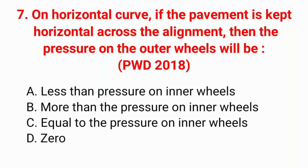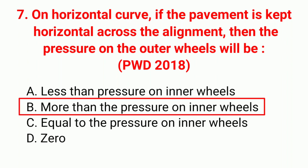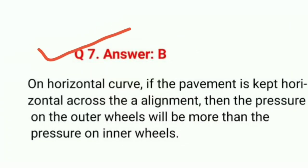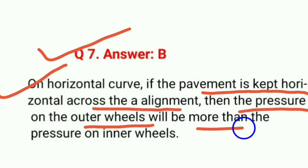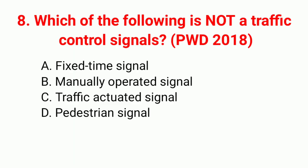Question 7: On a horizontal curve, if the pavement is kept horizontal across the alignment, the pressure on the outer wheels will be — answer B: more than the pressure on inner wheels. On a horizontal curve, if the pavement is kept horizontal across the alignment, then the pressure on the outer wheels will be more than the pressure on the inner wheels.